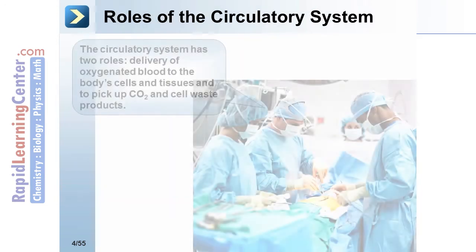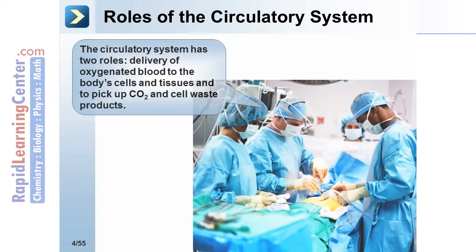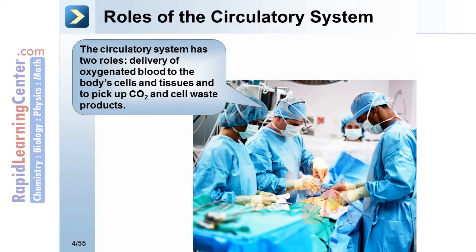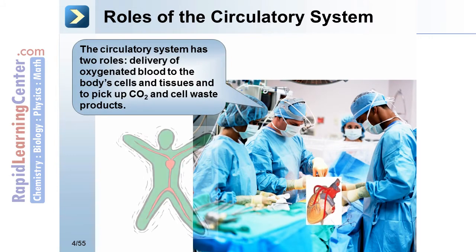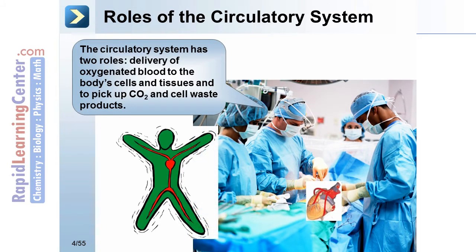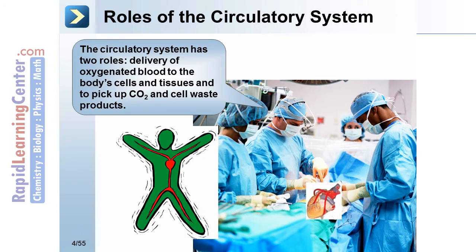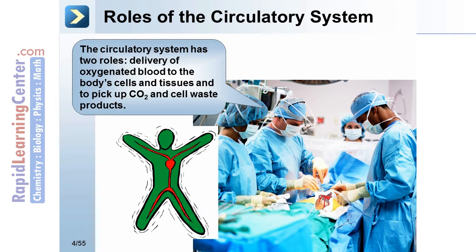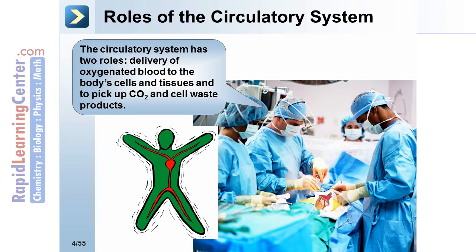The circulatory system has two roles: the delivery of oxygenated blood to the body's cells and tissues, and to pick up CO2 and cell waste products.